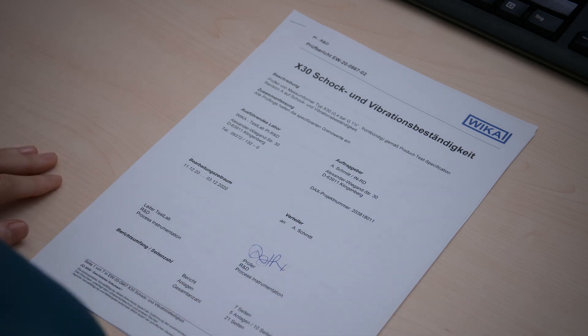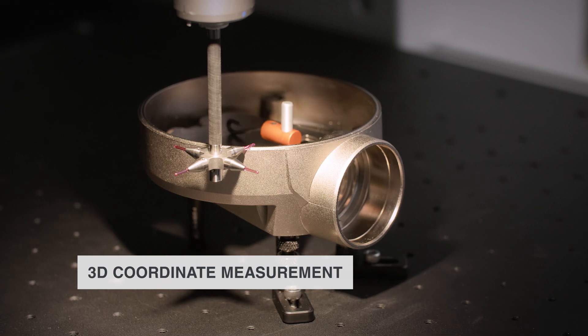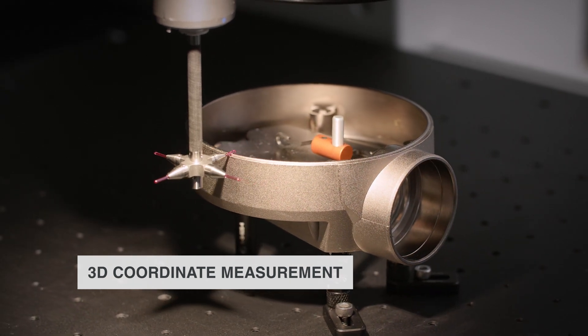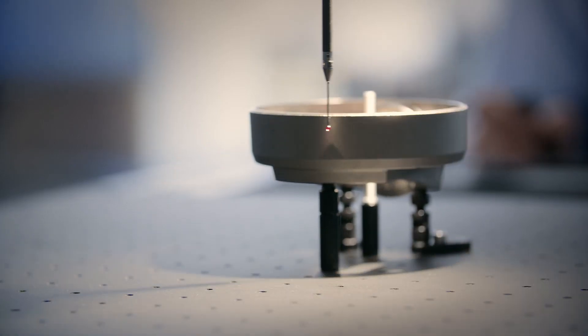And of course, they provide all the required evidence. The test procedures start early, for example in developing prototypes without time-consuming detours. Incoming inspections and material analyses control the quality of materials and components.